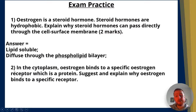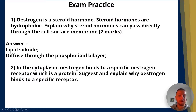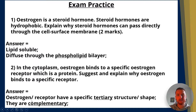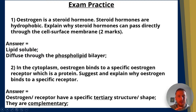Question two: In the cytoplasm, estrogen binds to a specific estrogen receptor which is a protein. Suggest and explain why estrogen binds to a specific receptor. The answer: one mark for saying the estrogen and receptor have a specific tertiary structure or shape — you must include the term 'tertiary'. The second mark is for saying they are complementary; the estrogen is complementary to the specific estrogen receptor.